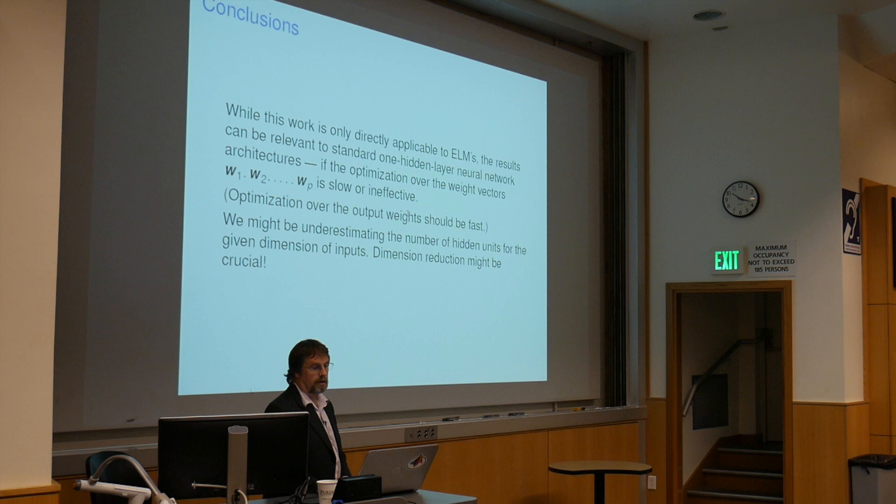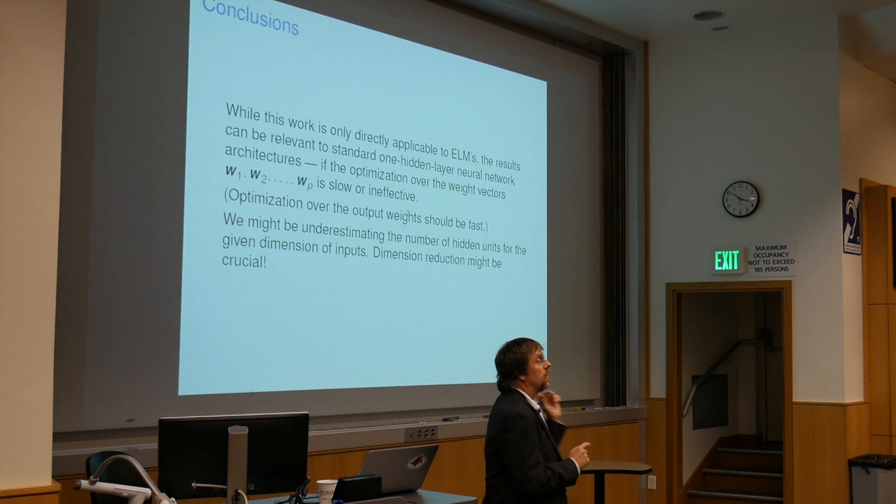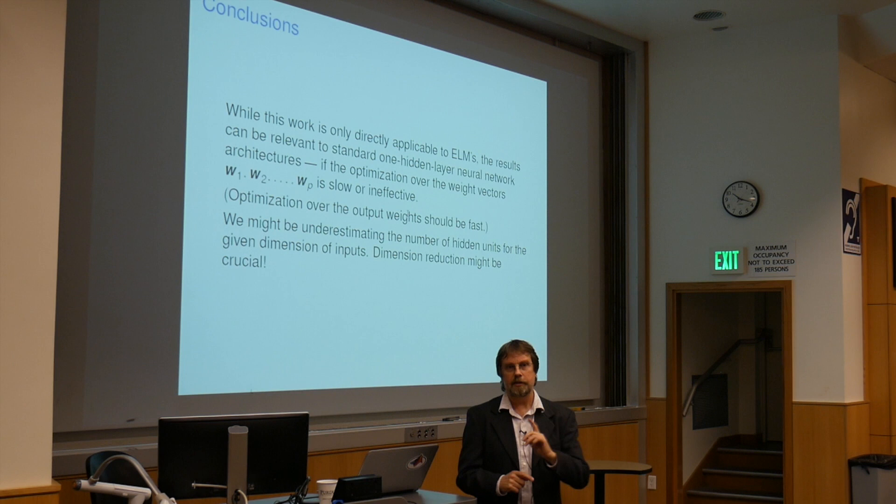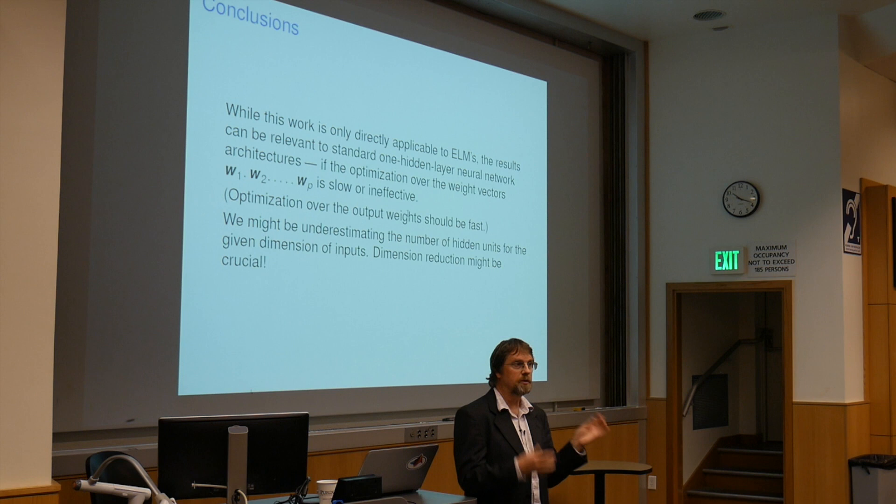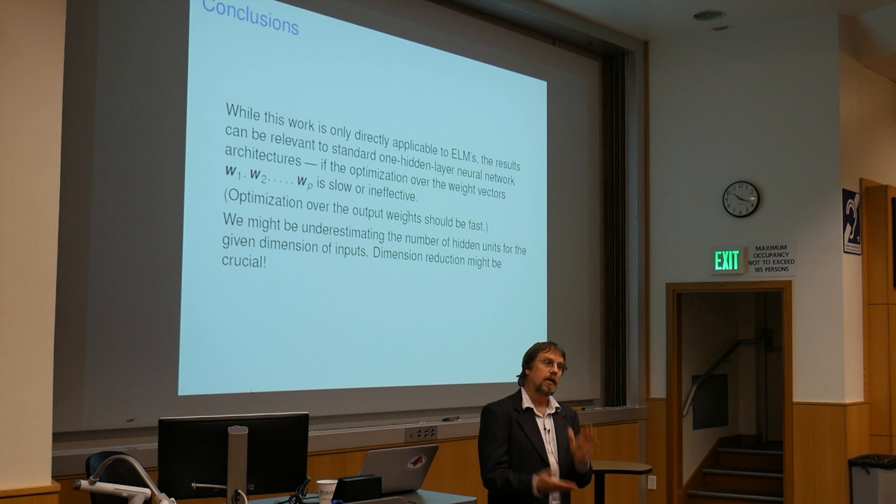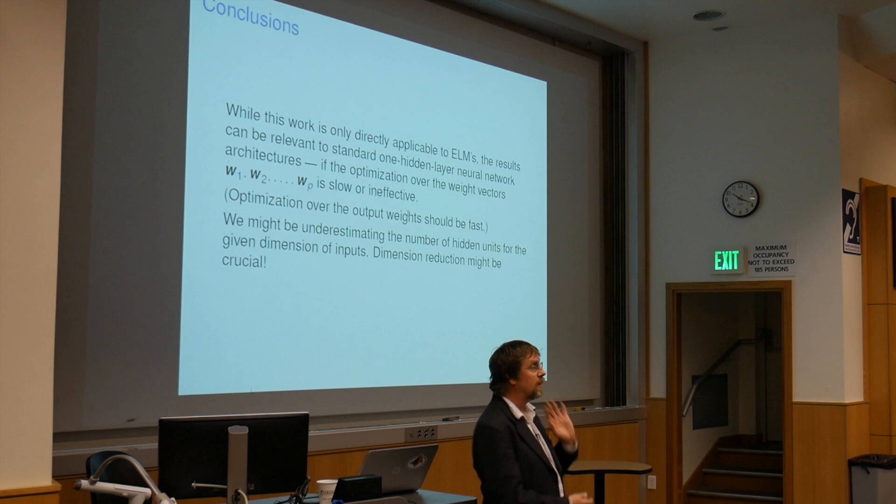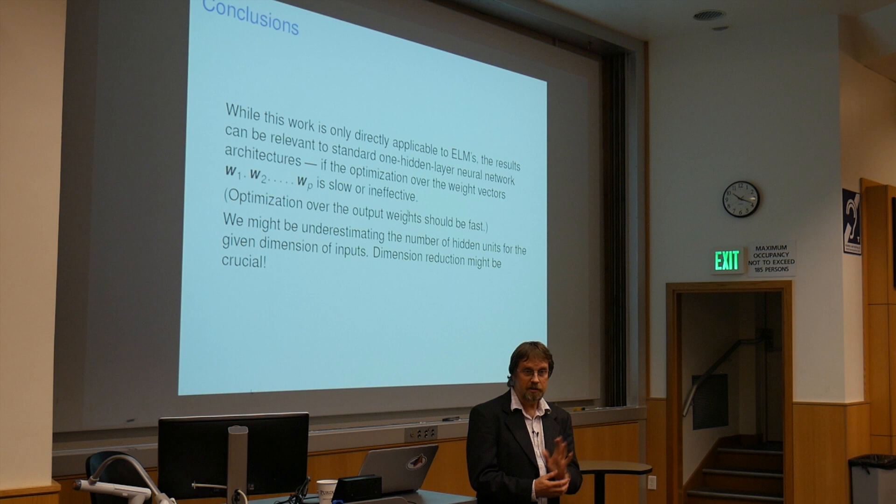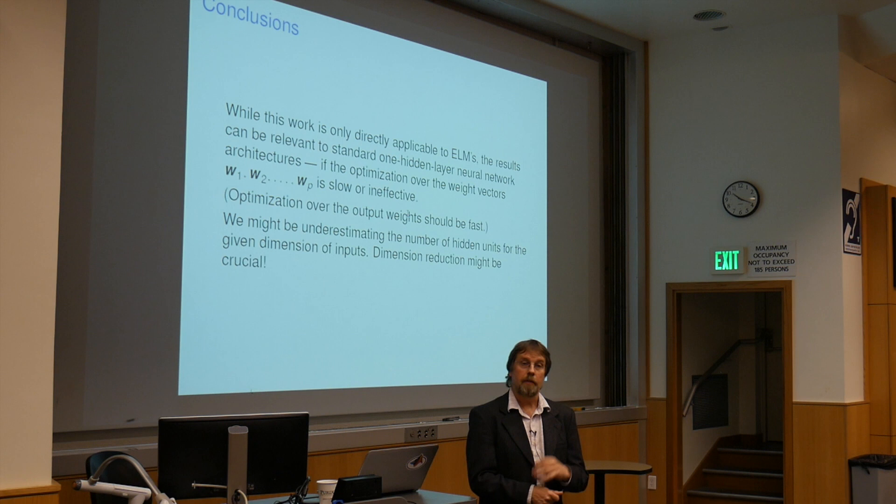So my conclusions is, first of all, for extreme learning machines, we should have something like at least m squared, where m is the dimension, hidden units. Now for regular neural networks, of course we're supposed to optimize over those weights feeding into the activation units. It's not clear to me how effective that is. If it is ineffective, I know that we can do optimization over the weights on the other side because that's just least squares. And our stochastic gradient descent might be very good at reducing those, the errors due to those weights, but not doing a very good job on the weights on the other side. That would seem to me maybe we might need - if we have say 10 inputs, maybe we need half 10 squared, about 50 hidden units at least.